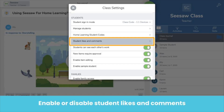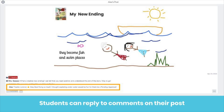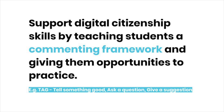You can enable or disable this setting in class settings. When students receive a comment on one of their posts, they see a notification in their inbox tab. Students can then read and reply to the comment. Enabling comments is a valuable opportunity for students to practice digital citizenship. Teach students a framework for structuring their comments — this helps students learn to give feedback that's appropriate and helpful.